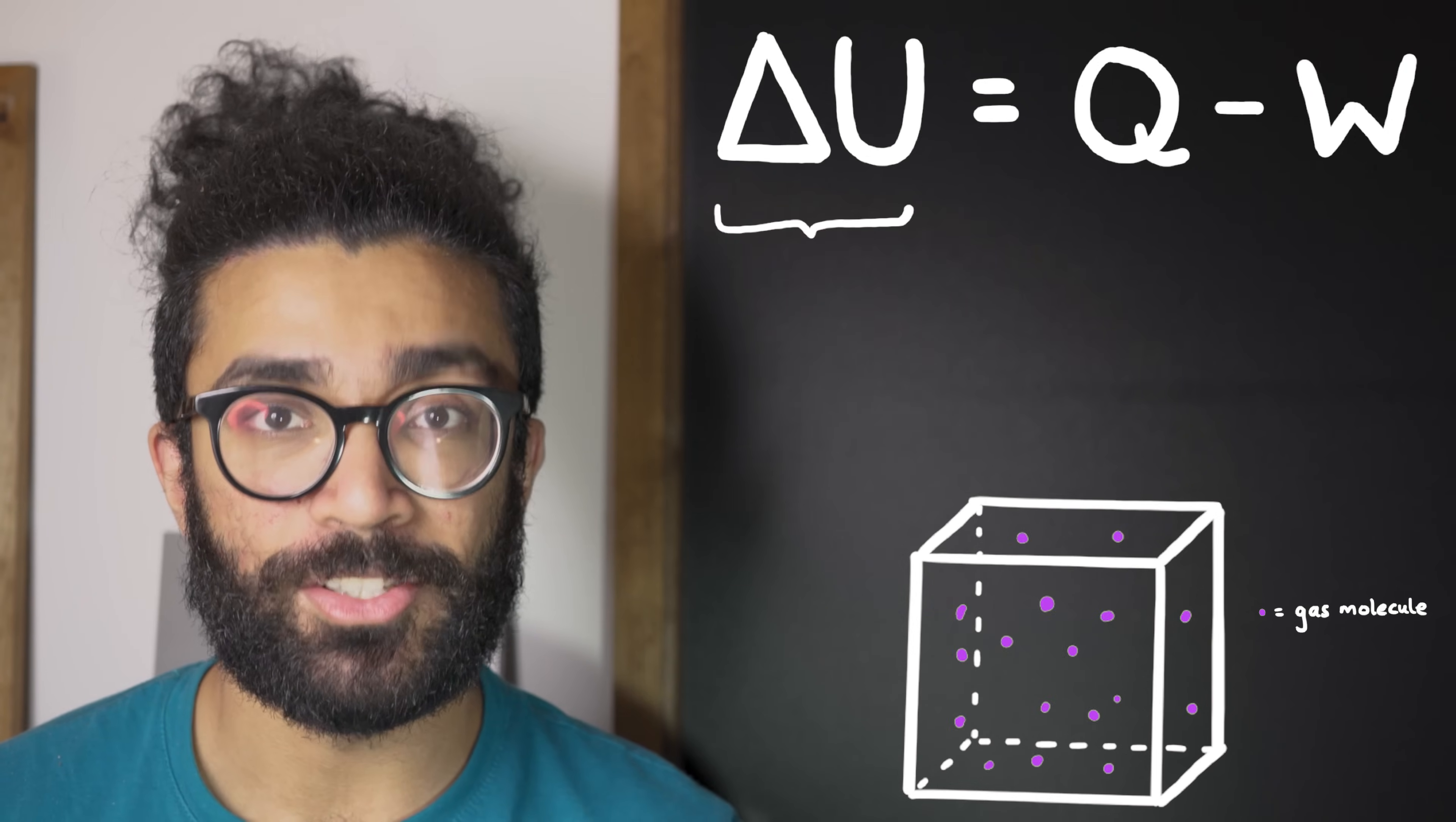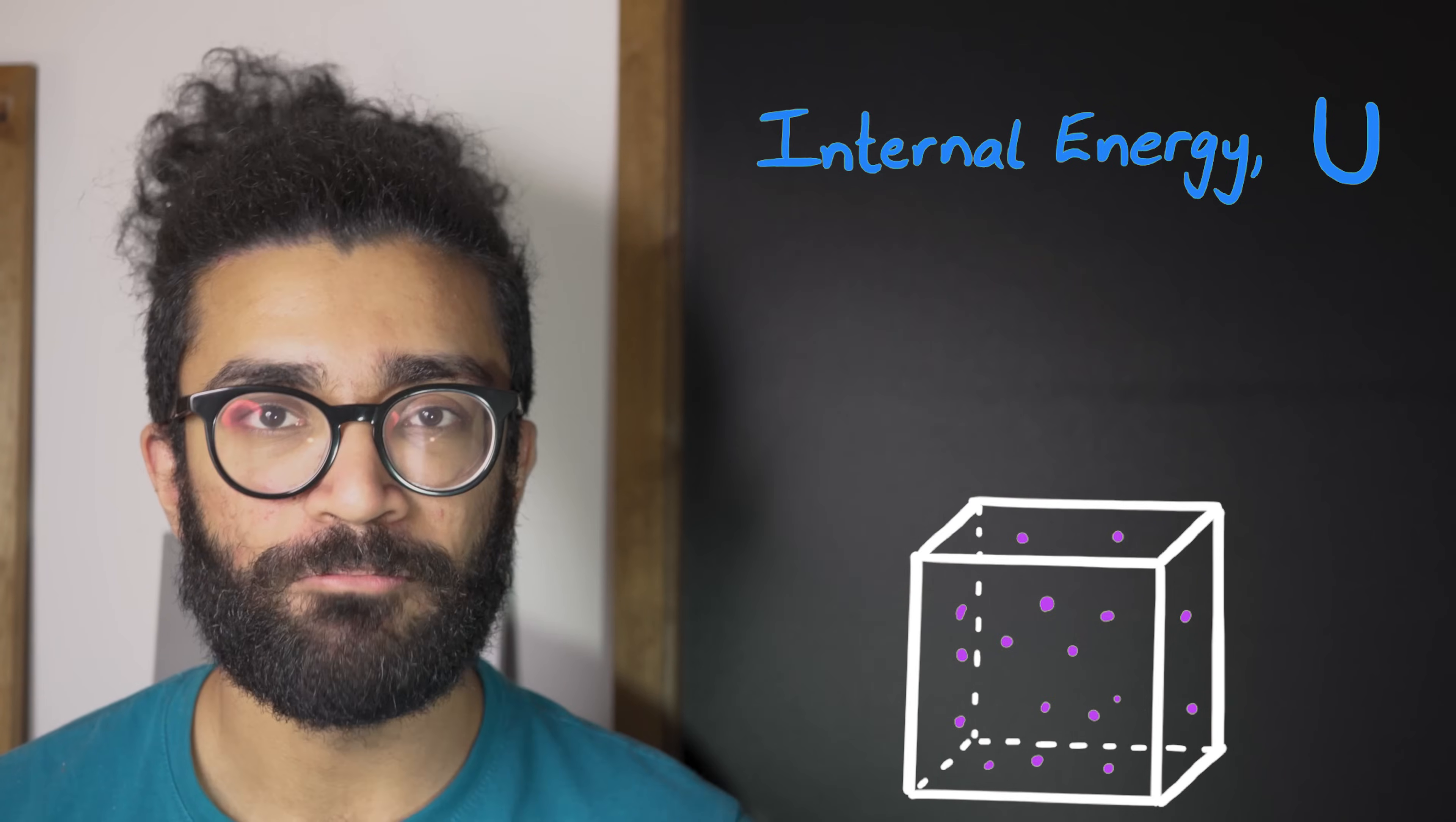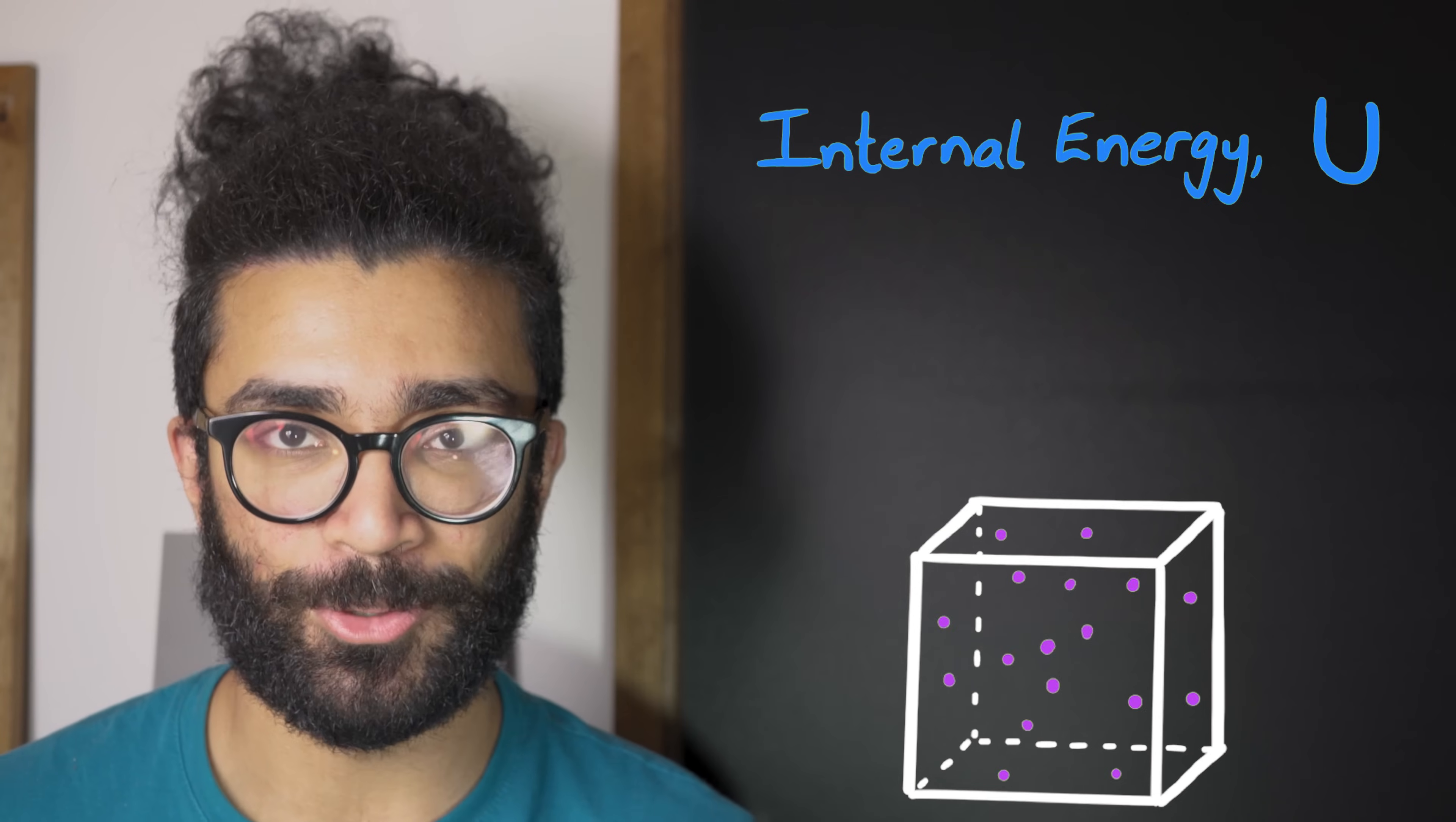then this term in the equation delta U refers to the change in the internal energy of our system. Now internal energy can be thought of as a measure of the state that our system happens to be in as a whole. Even though our system, our gas, is made up of millions of tiny little particles, and we can't track each one of their positions and velocities at each point in time, we can know something about the gas as a whole by knowing its internal energy.